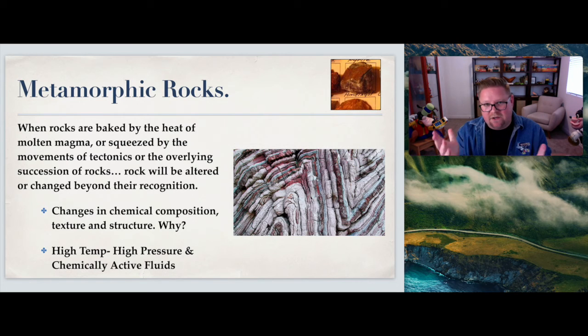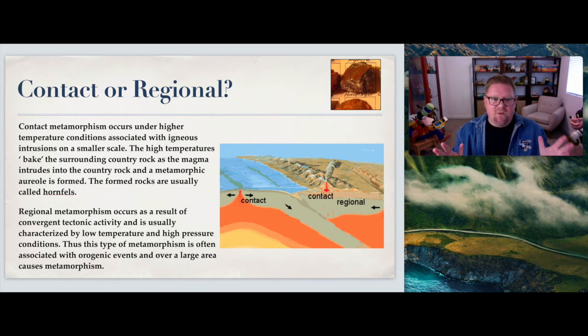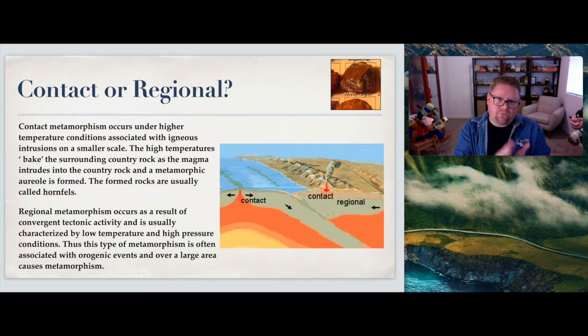Contact versus regional - two different things. Contact metamorphism occurs under higher temperature conditions and they're often associated with igneous intrusions on a much smaller scale, like a point of contact. The high temperatures will bake the surrounding country rock as the magma intrudes into this country rock. The formed rocks are usually called hornfels. Contact metamorphism - it's a point of contact, can be very large like a volcano, but it's done predominantly on or around igneous rock.